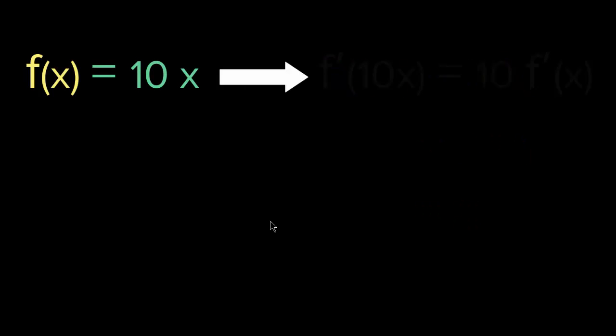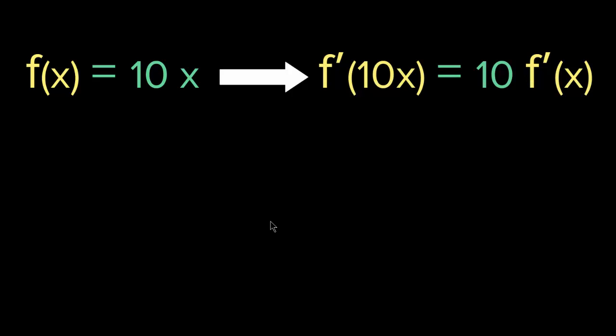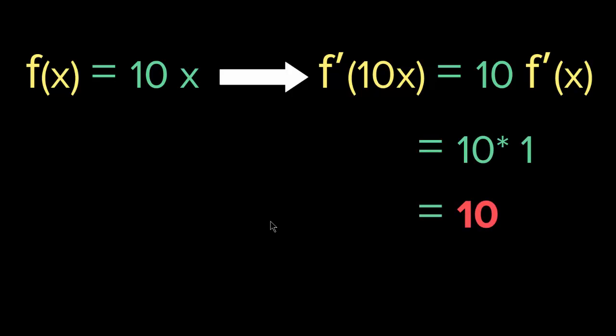Also, if we have f of x equaling 10x, then the derivative of this is 10 times f prime of x. We know that f prime of x is 1. Therefore, we get 10 times 1, we get 10. As you can see, the constant times the derivative of the variable gives us the derivative of the function when we have a constant and a variable.